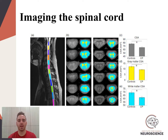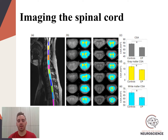We were then able to calculate the total cross-sectional area of the spinal cord, as well as the cross-sectional area of both the gray and the white matter. In doing so, we found that the total cross-sectional area of the spinal cord, as well as the cross-sectional area of both the gray and the white matter, were all significantly reduced in the adults with cerebral palsy.